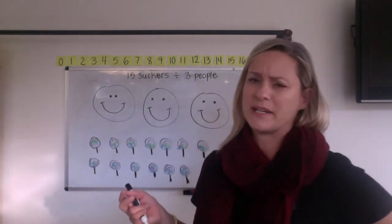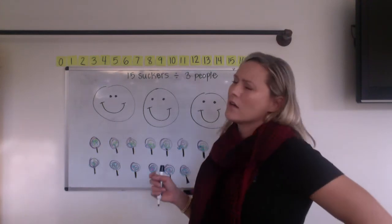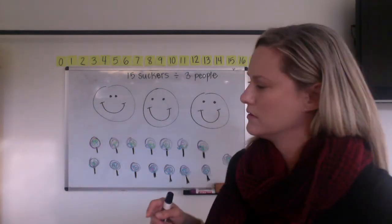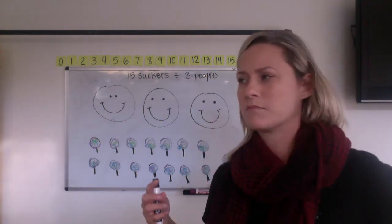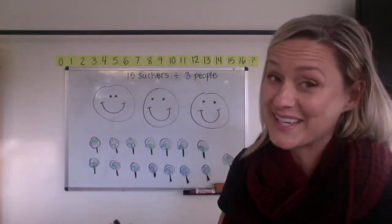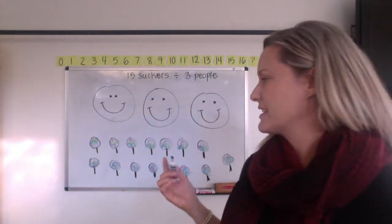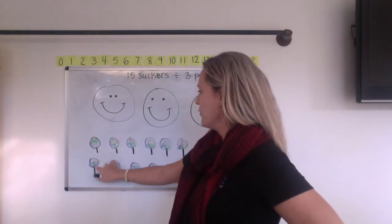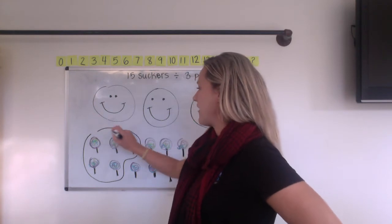So again, we can ask ourselves, will everybody get two suckers or more than two suckers? Let's figure that out. Two, four, six. Okay. Everybody's going to get more than two suckers, right? How about let's go to the next friendly number. I start thinking about five. Would everybody get five suckers? More? Less? Let's find out. Five, 10, 15. Well, actually, that gave us our number right there, right? So it's all about kind of estimating. So now I know I'm going to give each person five suckers.